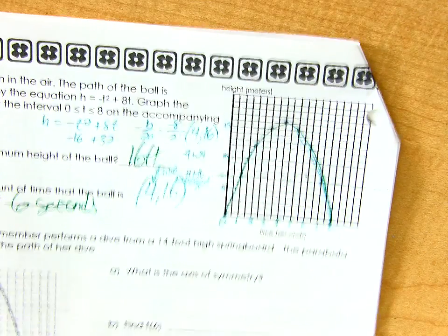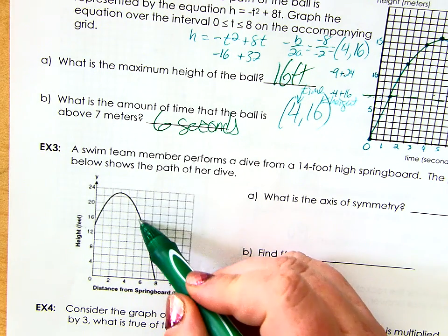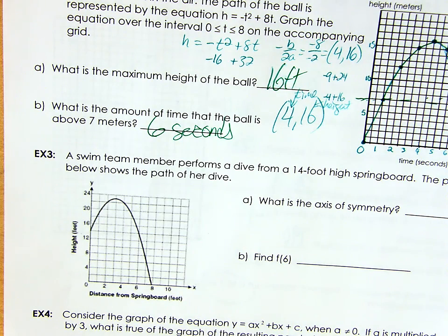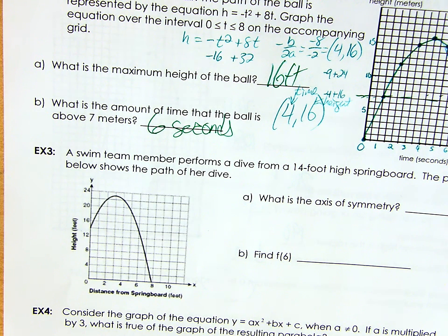Alright, let's look at the third example because this one's a little bit different now. A swim team member performs a dive from a 14-foot high springboard. The parabola below shows the path of her dive. So this person did not start on the ground. They're already starting 14 feet up. So they're going to jump off the board and then land in the water. Does that make sense? This time also, the x-axis is not time. They went distance away from the springboard. That's interesting.